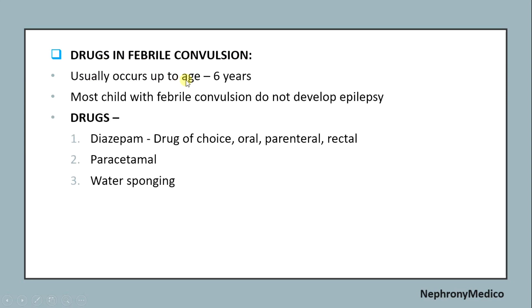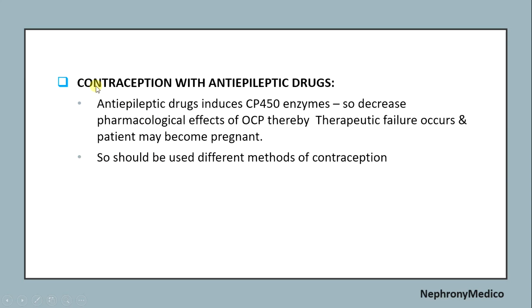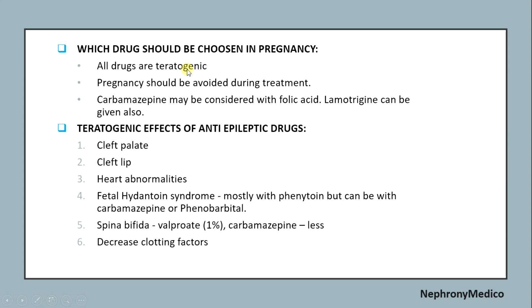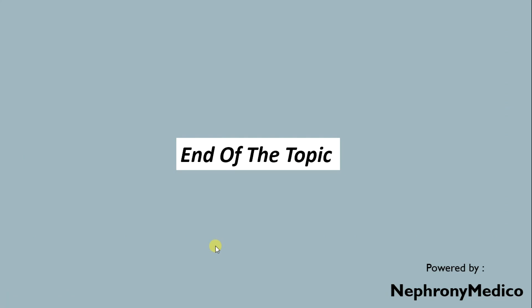Drugs in febrile convulsions: children below six years of age usually do not develop epilepsy. Drugs include diazepam, which is the drug of choice, paracetamol, and tepid sponging. Regarding contraception with antiepileptic drugs: antiepileptic drugs induce CYP450 enzymes, so they decrease the pharmacological effects of oral contraceptives, thereby causing therapeutic failure and risk of pregnancy. Different methods of contraception should be used. Regarding which drugs should be chosen in pregnancy: all drugs are teratogenic. Pregnancy should be avoided during treatment, but carbamazepine may be considered with folic acid. Lamotrigine can also be given. Teratogenic effects of antiepileptic drugs include cleft palate, cleft lip, heart abnormalities, fetal hydantoin syndrome, spina bifida, and decreased clotting factors.